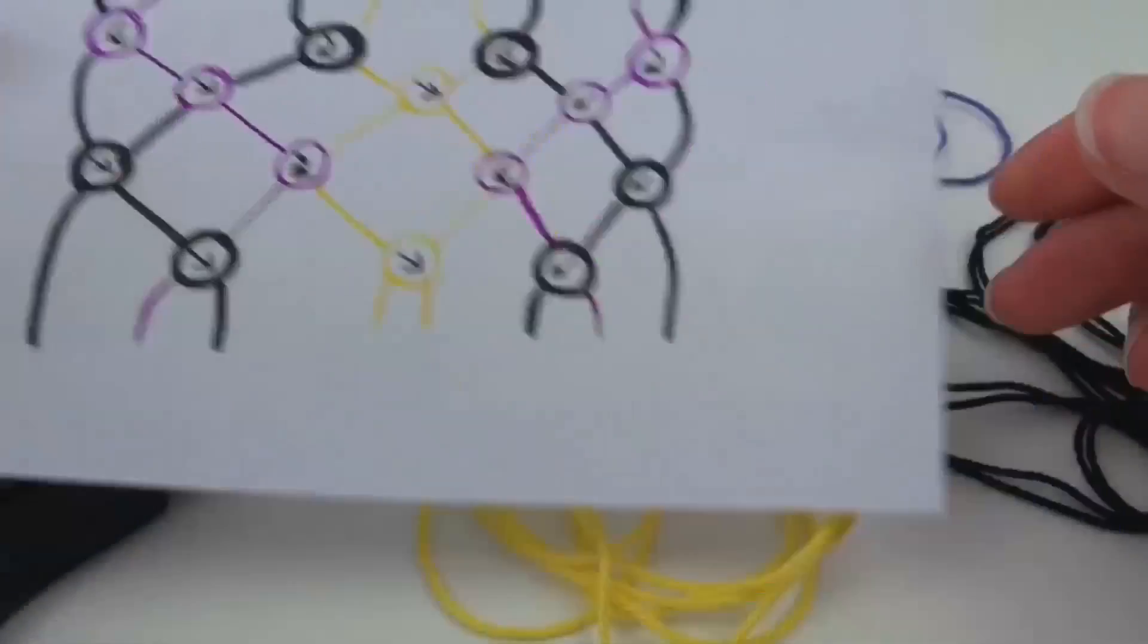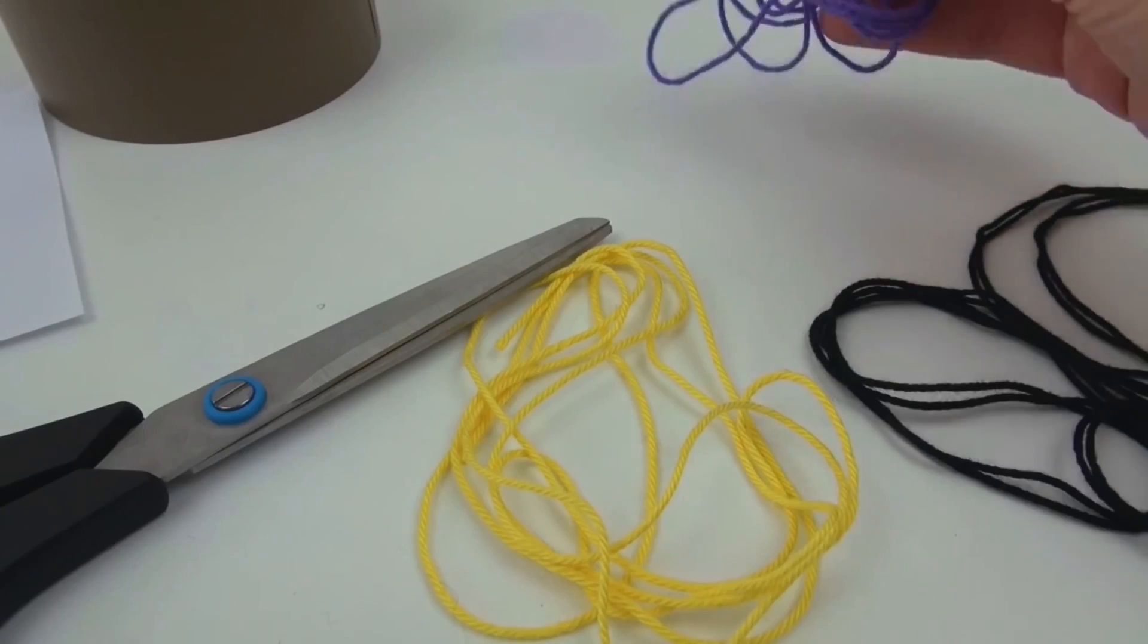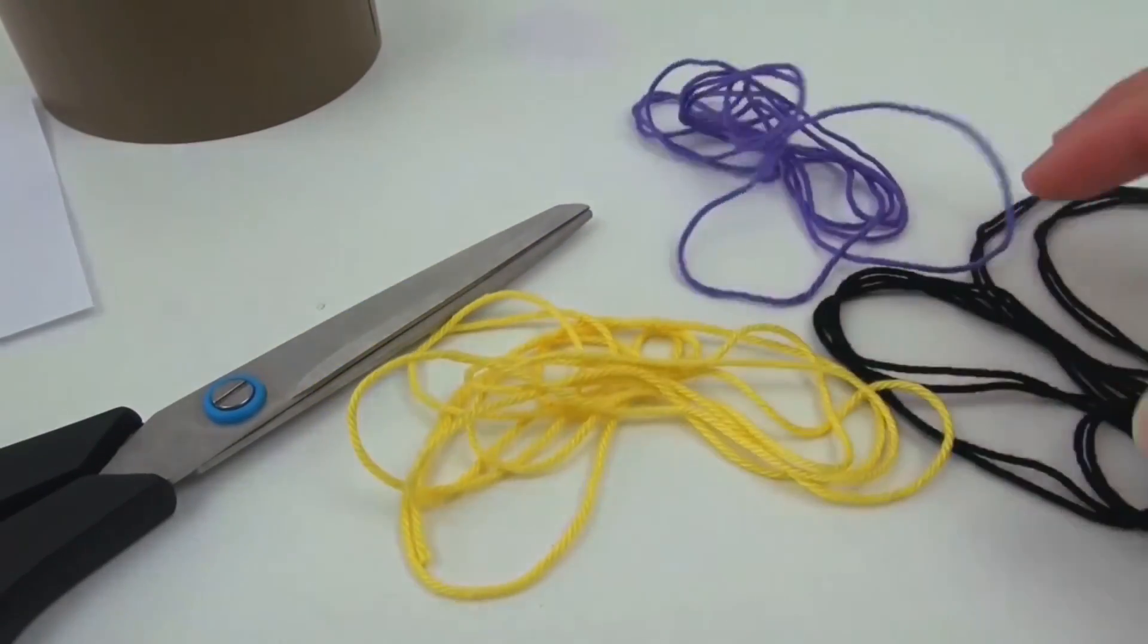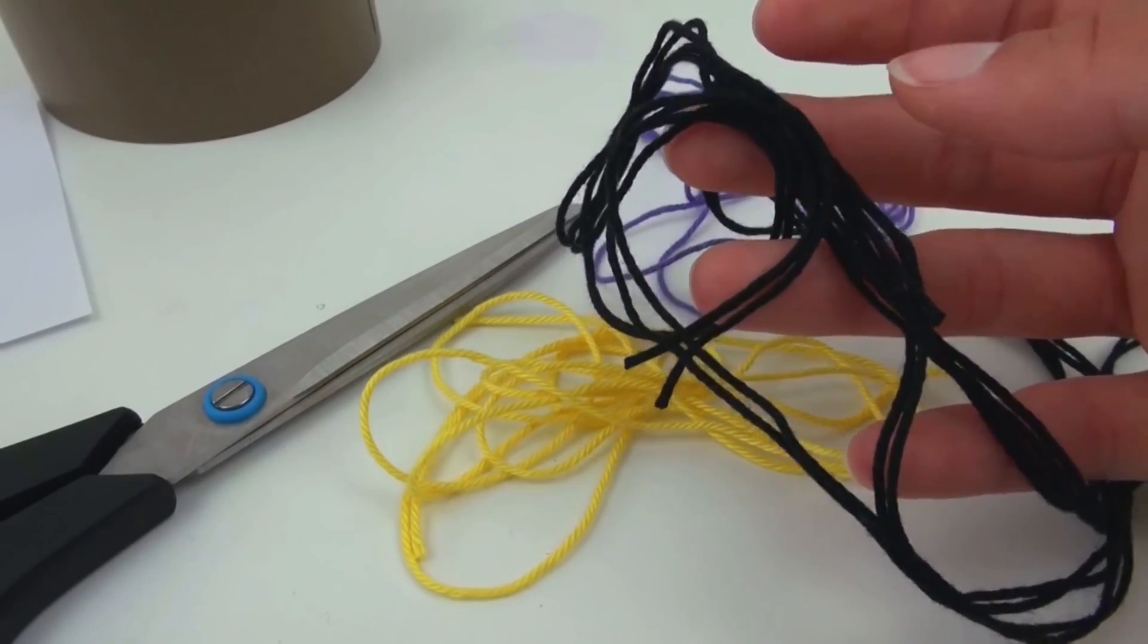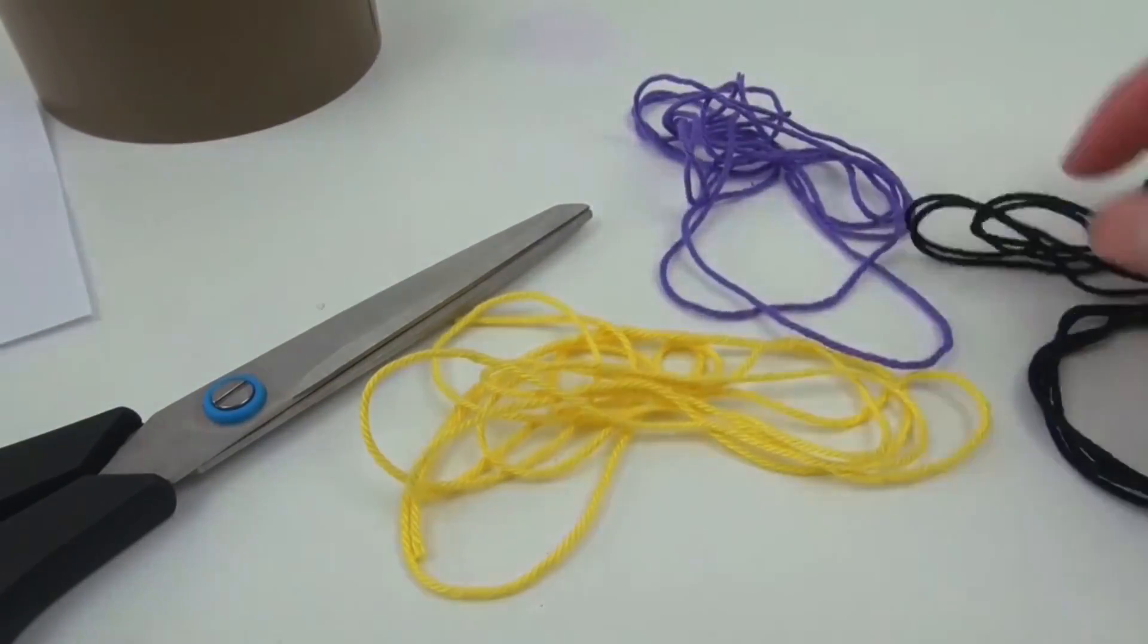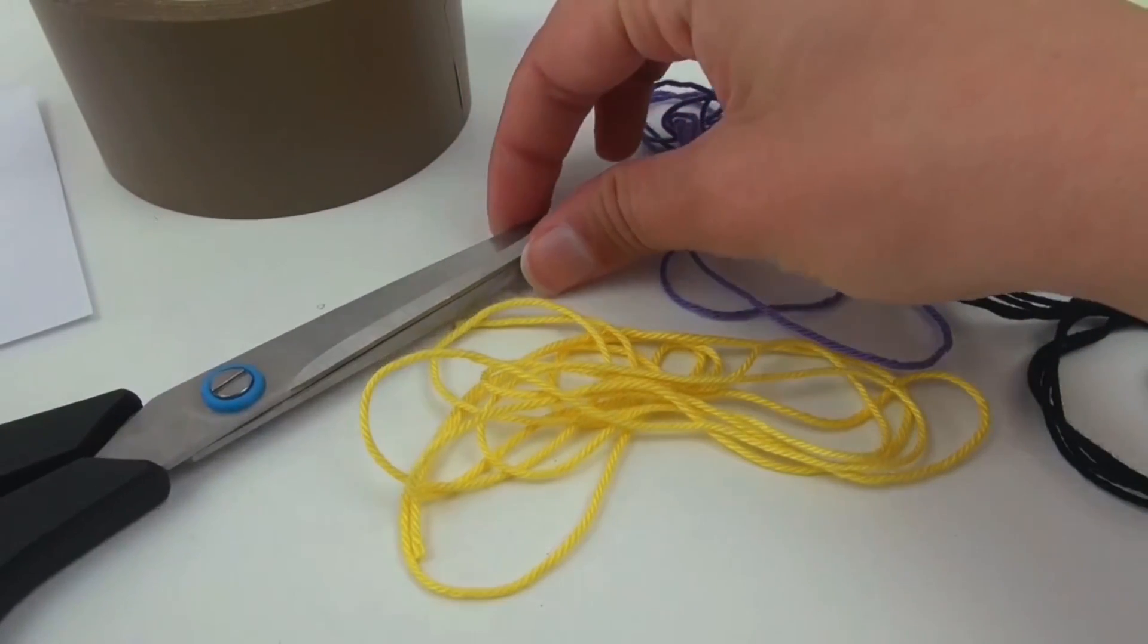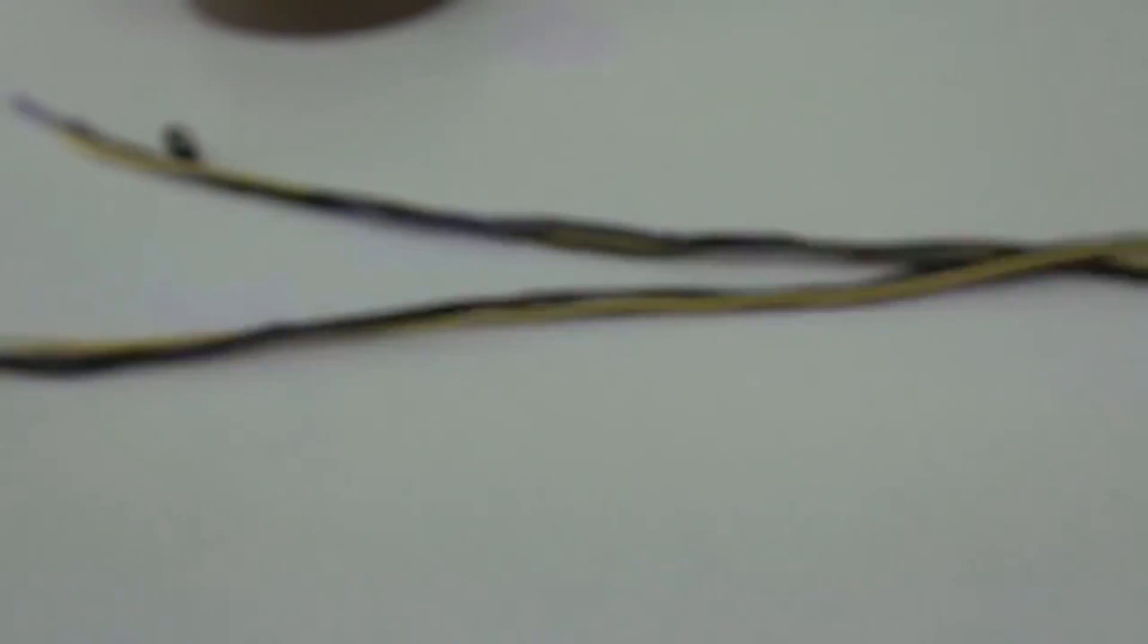We work with three different colors, so we work with purple, 120 centimeters, one yellow one the same length, and two strings of the black color the same length. We've got some tape as well with the scissors to make sure that the bracelet will hold on the table, which is easier to work with that way.